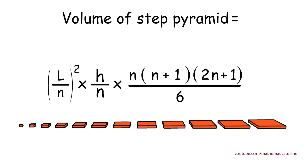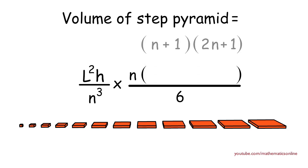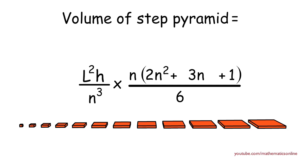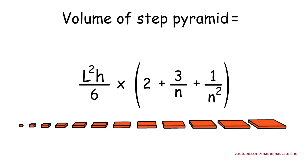Next we simplify our formula. First, (l/n)² becomes l² over n². We multiply this with h/n to get l²h over n³. Next we multiply out (n+1)(2n+1) to get 2n² + n + 2n + 1, which simplifies to 2n² + 3n + 1. Now n and n³ cancel, leaving n² at the bottom. We switch 6 and n², distribute the denominator, and cancel like terms. This gives us the volume of the step pyramid equal to (l²h / 6) times (2 + 3/n + 1/n²).